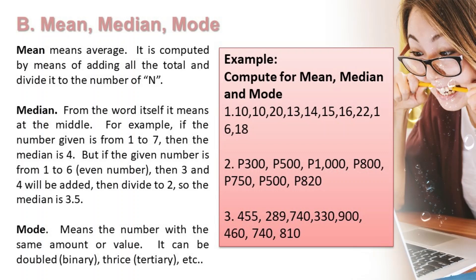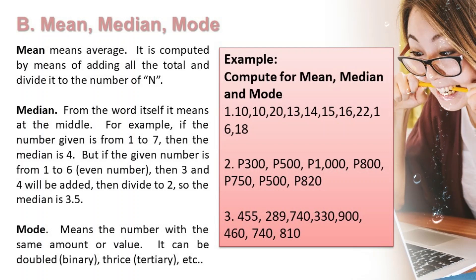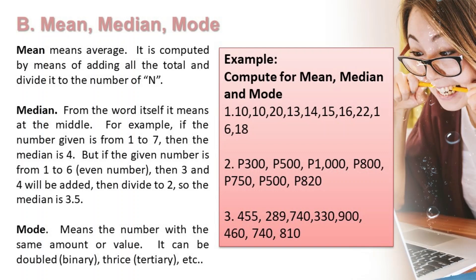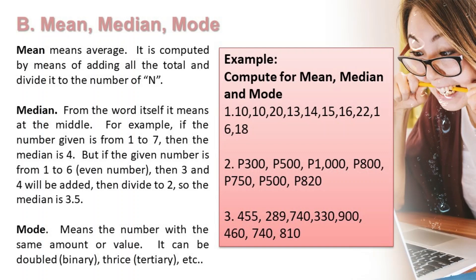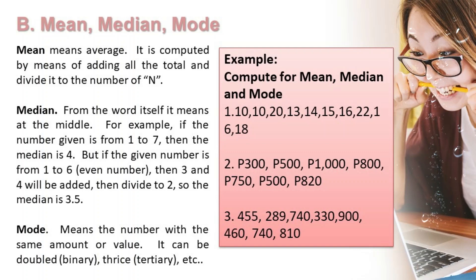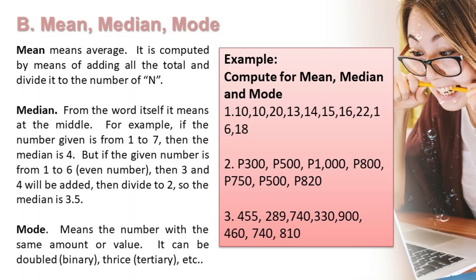Median — from the word itself, it means the middle. For example, if the numbers given are from 1 to 7, then the median is 4. But if the numbers are from 1 to 6, an even count, then 3 and 4 are added and divided by 2, so the median is 3.5.